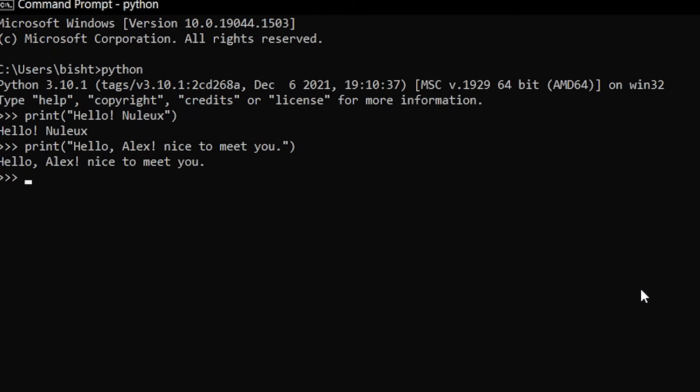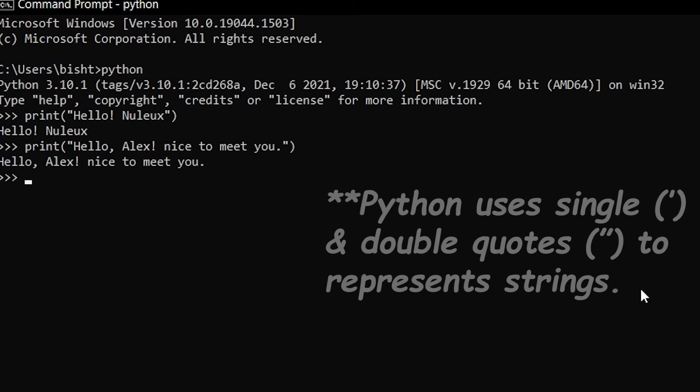One thing you have noticed that I'm using double quotes outside the message. This is because we are printing a string. In Python, strings are used with single and double quotes outside them. We will see more about them later in the course.